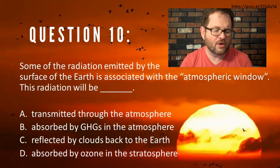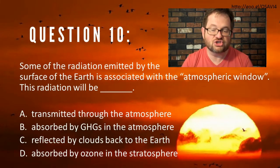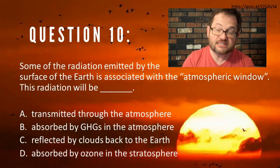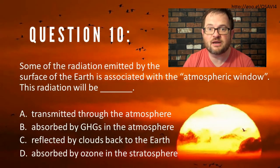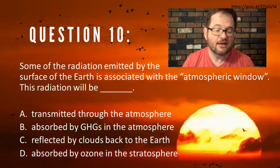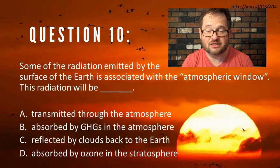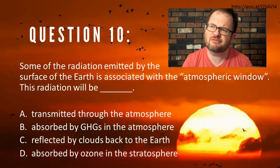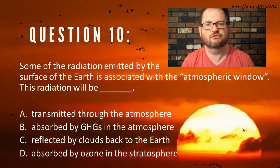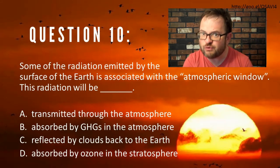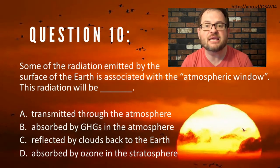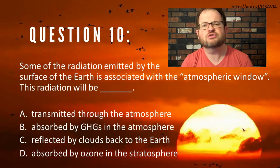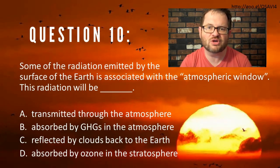Question 10: Some of the radiation emitted by the surface of the Earth is associated with the so-called atmospheric window. This radiation will be: A) transmitted through the atmosphere, B) absorbed by greenhouse gases in the atmosphere, C) reflected by clouds back to the Earth, or D) absorbed by ozone in the stratosphere. The Earth emits radiation across a range of wavelengths — some of it falls in the atmospheric window range. What happens to radiation in that range? Look at those four options, make a choice, and get feedback before moving on to question 11.